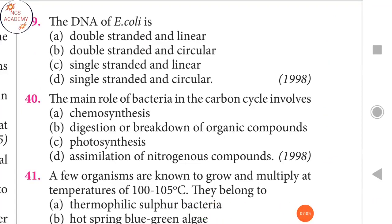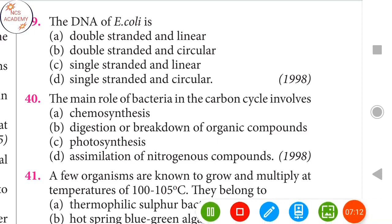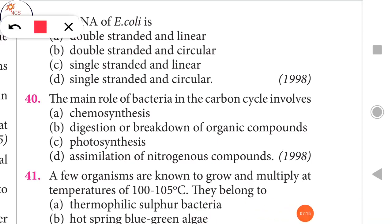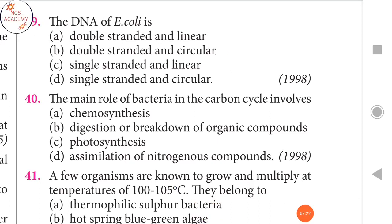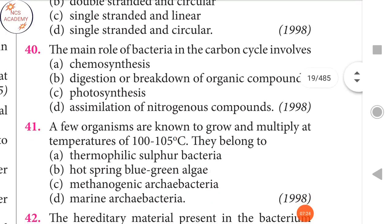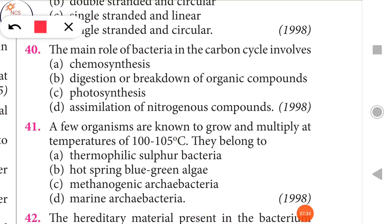Next question: The DNA of E. coli is double-stranded and circular. That is the right answer. Next question: The main role of bacteria in the carbon cycle involves digestion or breakdown of organic compounds. That is the right answer.